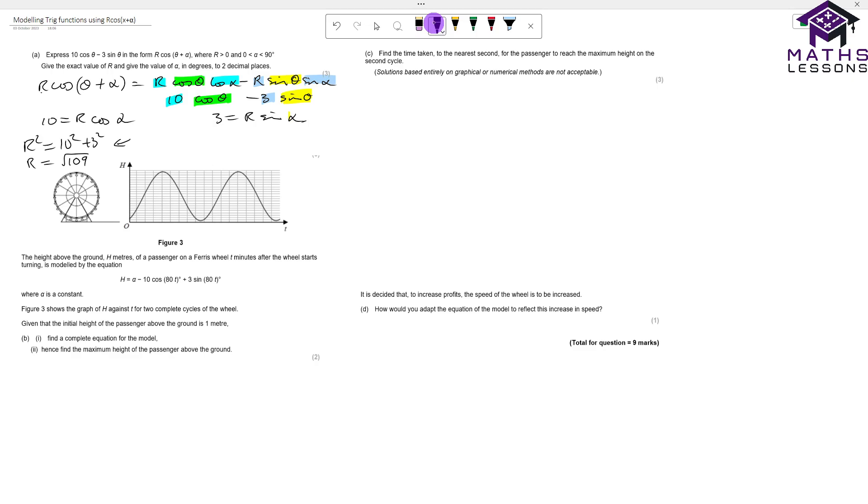Where I would not recommend taking a shortcut is learning off by heart how to find the α. If we do equation 1 divided by equation 2, we'll get tan(α) because we've got sin(α) divided by cos(α) and the r's will cancel. That will give me tan(α) equals 3 divided by 10. Therefore we can get α is inverse tan of that, which comes out to be 16.7 degrees.